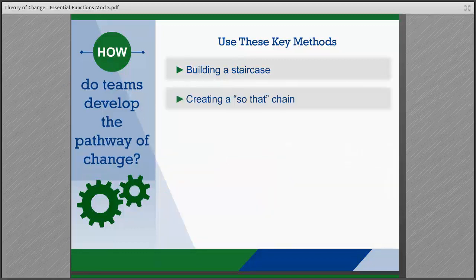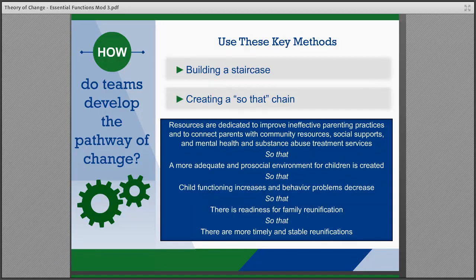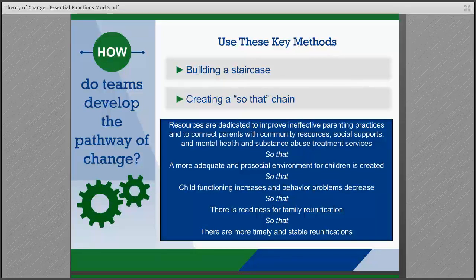Now let's take a look at the other approach to develop a pathway of change through causal links: the SO-THAT chain. This method involves teams considering the dependencies in the pathway of change through a series of SO-THAT connectors between the causal links. This method is sometimes helpful for teams to visualize that each causal link is dependent on the one before it.